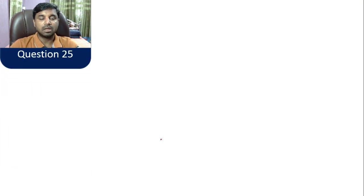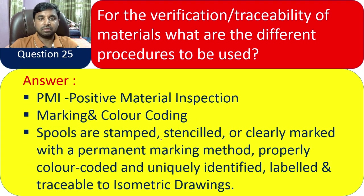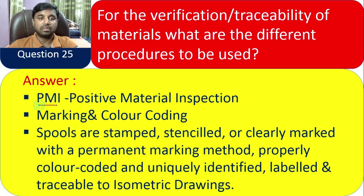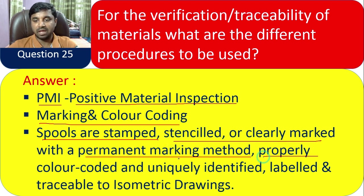Question 25: For verification or traceability of materials, what procedures are used? For PMI (Positive Material Identification), check proper material composition, marking, and color coding. Spools shall be clearly marked with a permanent marking method. Packaging procedure shall have labels traceable to the material with appropriate marking.